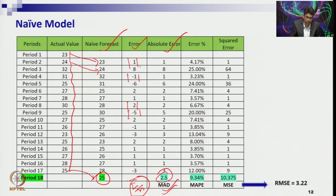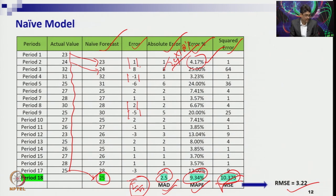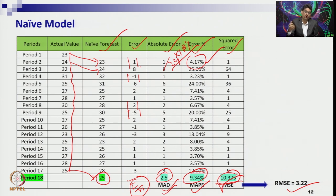For the sample data, MAD has been calculated. You take the absolute error, and the average gives MAD — suppose 2.5 for this data. For MAPE, you take absolute error divided by actual data and multiply by 100 to get the percentage error; the average gives MAPE. For MSE, you square the errors and take the average; RMSE is the square root — suppose 3.22.